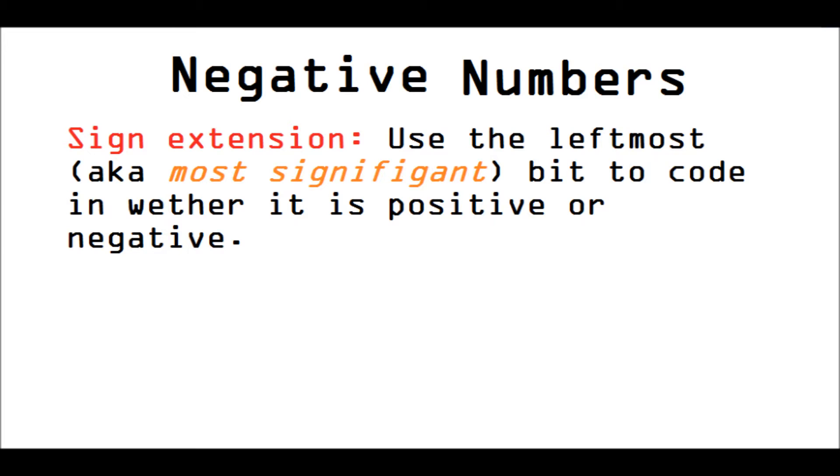By using the most significant bit or the leftmost bit to code in whether it is positive or negative with a one meaning that the number is negative and with a zero meaning that the number is positive.